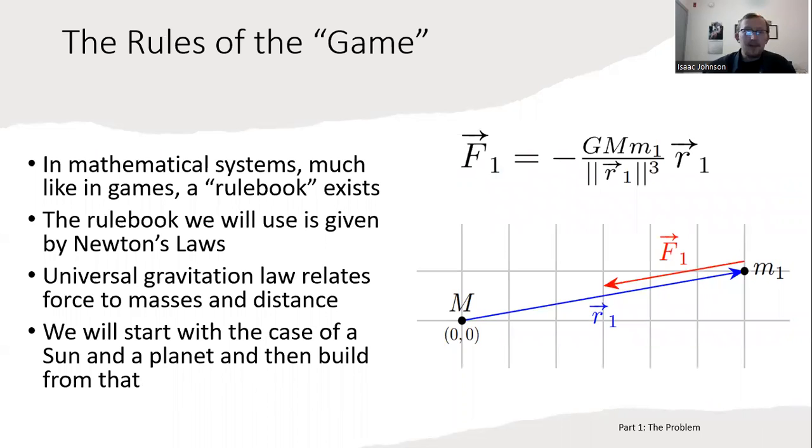In mathematics systems, much like in games, you could think of them as having rule books. The rule book we're going to use is given by Newton's universal law of gravitation. What the universal gravitation law does is it relates the force on one body by another body, and it bases it on the masses of each body and the distance between the two bodies.